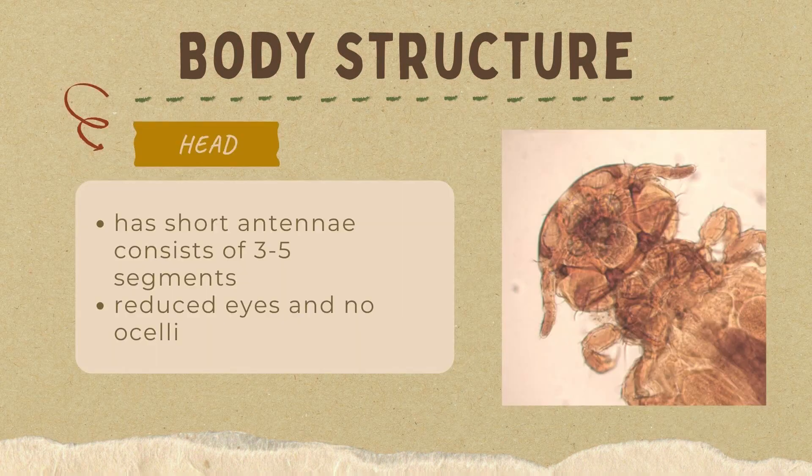First is the head. Their antenna is short, with three to five segments. They have reduced eyes, or what we call vestigial, and no ocelli. And they have a rounded head.